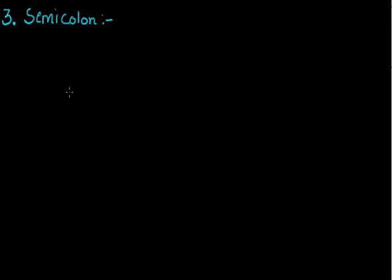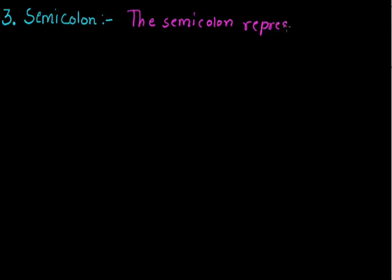The semicolon represents a pause of greater importance than that shown by the comma. It means whenever we have a part in the sentence that is more important to highlight, then we use the semicolon. We all must be aware about the semicolon, but very few of us are aware when we should use it. So whenever we have to show greater importance to any part of the sentence, we can use the semicolon before that important part.